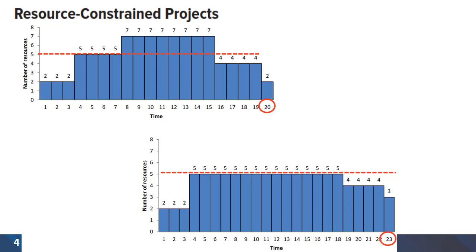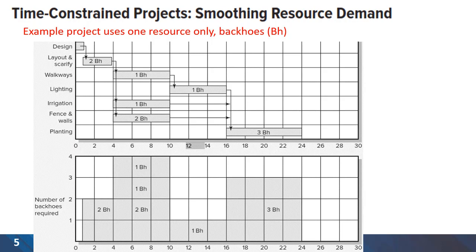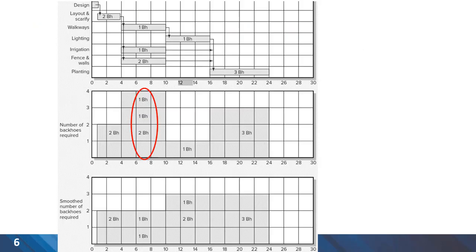We will be looking at different examples. Here is an example for a landscaping project. As you can see, there is only one resource required for the project, which is a backhoe. There are different activities shown on the Gantt chart with arrows demonstrating relationships between the project's activities. We have an increased demand for backhoe between periods 4 to 10, where 4 machines are required in that period of time. We can see this in the middle graph.